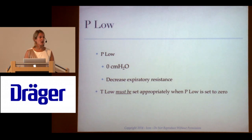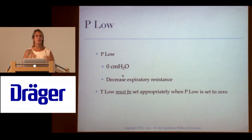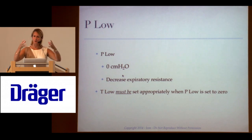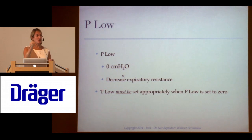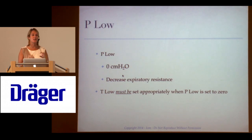Now, P low. There's controversy over using a P low of 0, 2, or 5. We use a P low of 0 for a few reasons. First, it decreases expiratory resistance to gas flow. APRV is very good at diffusive gas exchange during the P high / T high CPAP phase. When the breath is released, it's full of CO2. Adding resistance on top of the artificial airway can impede CO2 removal and cause CO2 to rise. The T low must be set properly if using a P low of 0.